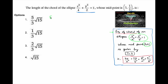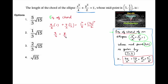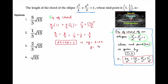So here we can see the equation of the chord. Substituting h=1, k=1/2, a²=4, b²=2: x/4 + y/4 = 1/4 + 1/8, which gives 2x + 2y = 3. This can also be written as y = (3 - 2x)/2, or y = -x + 3/2.